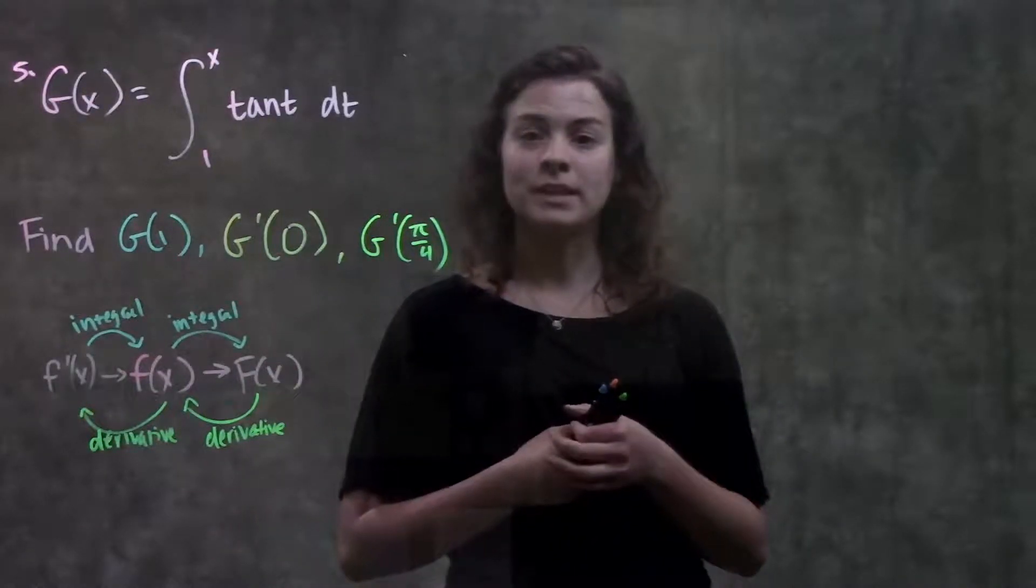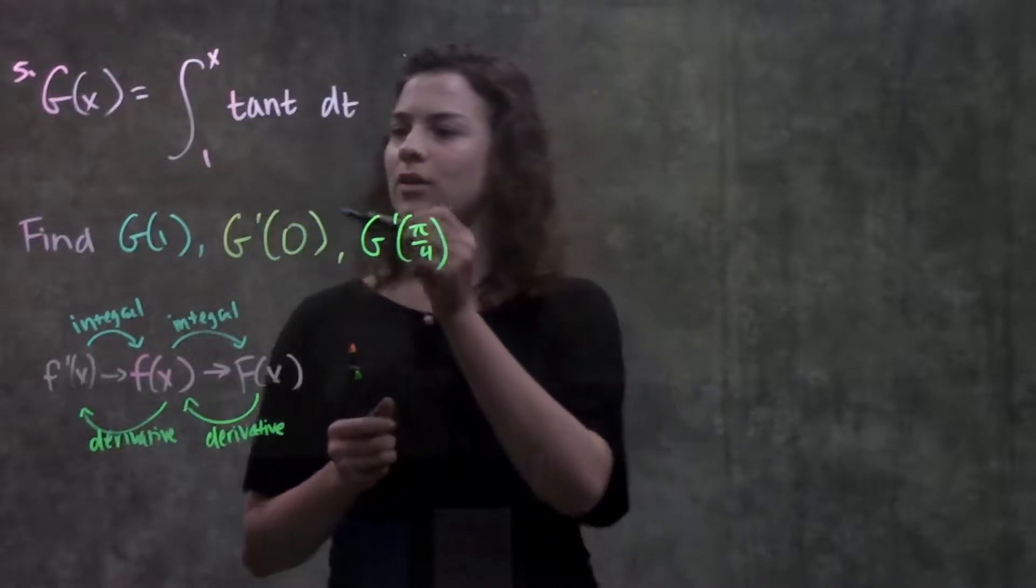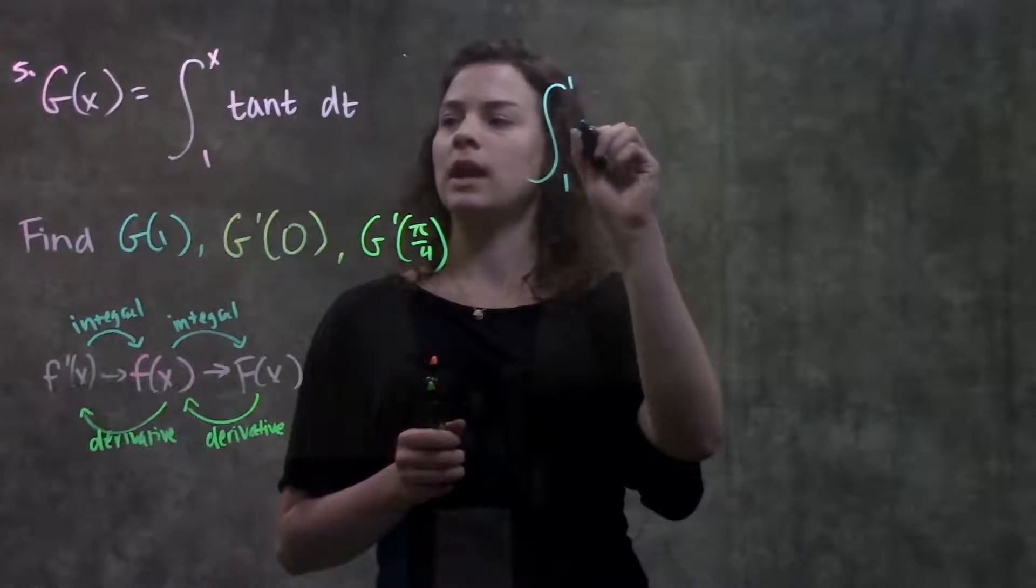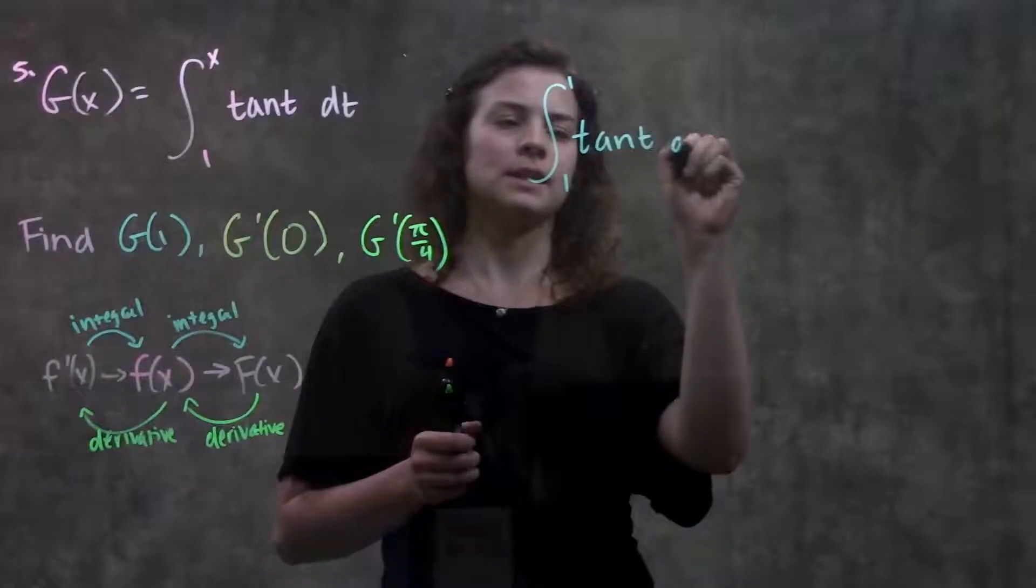Part A is asking us for big g of 1. So we just plug in 1 for our x, and it becomes the integral from 1 to 1 of tangent t dt.